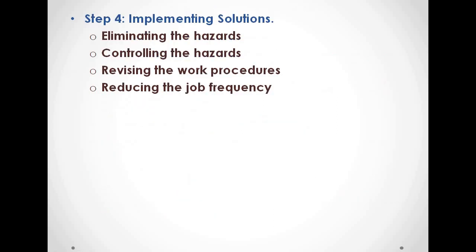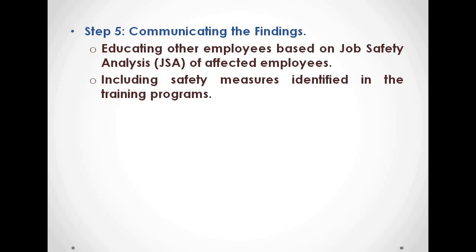Once the hazards are identified, the next step 4 is to implement the solutions. This includes eliminating the hazards, controlling the hazards, revising the work procedures, and reducing the job frequency as solutions that can be implemented.